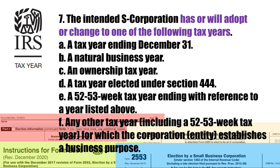Number 7. The intended S-Corporation has or will adopt or change to one of the following tax years: (a) a tax year ending December 31st; (b) a natural business year; (c) an ownership tax year; (d) a tax year elected under Section 444; (e) a 52-53 week tax year ending with reference to a year listed above; (f) any other tax year, including a 52-53 week tax year, for which the corporation establishes a business purpose.